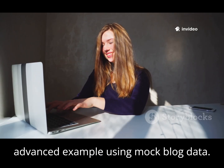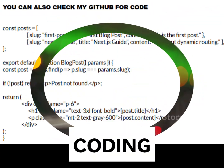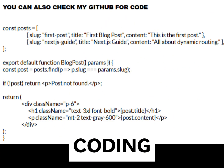Here's a more advanced example using mock blog data. Define a posts array with slugs, titles, and content. Then in your component, use posts.find(p => p.slug === params.slug). If the post isn't found, return 'Post not found'; otherwise, return post.title and post.content.